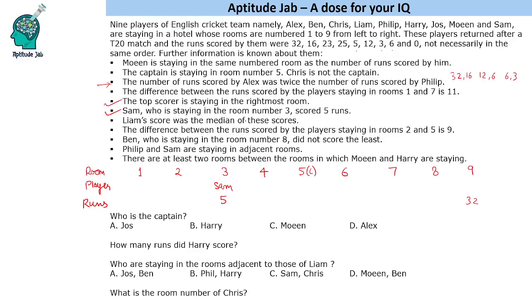Liam's score was the median of all scores. There are 9 players, so the median is the 5th score from either end. Looking at the scores from smallest: 0, 3, 5, 6, and 12. So Liam's score is 12.